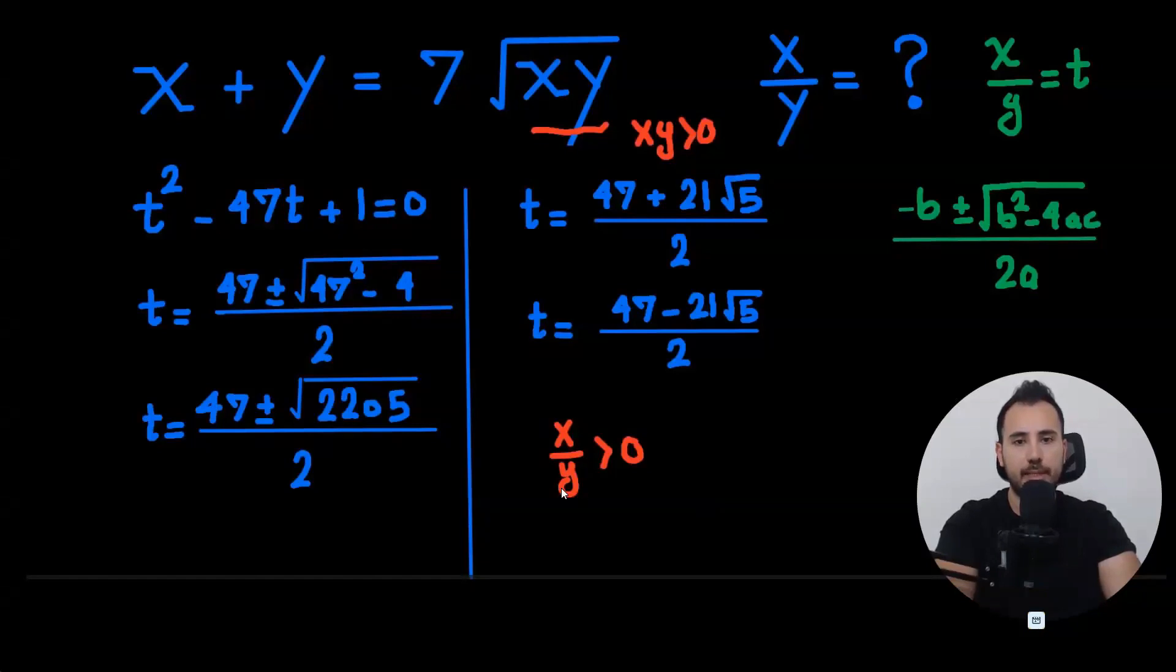And x over y was t. So that means both of these should be positive. The first one is obviously positive. The second one, is that positive or is it negative?